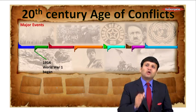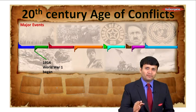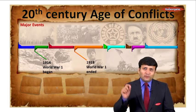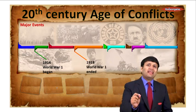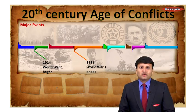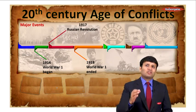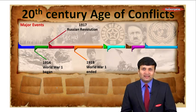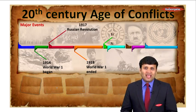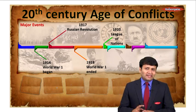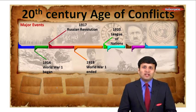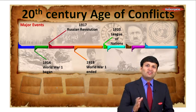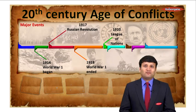The first major event was in 1914 when World War One started, ending in 1918. Between 1914 and 1918, another major event broke out in 1917 — the Russian Revolution. Once the war ended in 1918, a lot of efforts for peace began. In 1920, an international organization was formed to establish peace in the world, called the League of Nations — though eventually it didn't prove to be very successful.